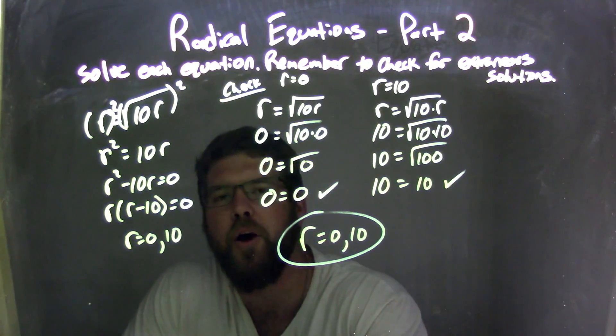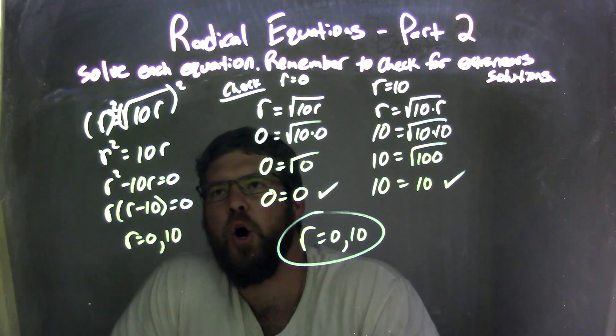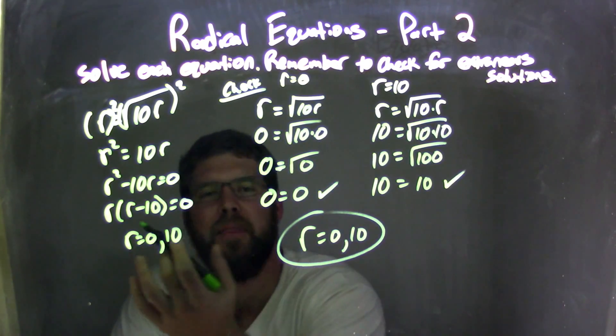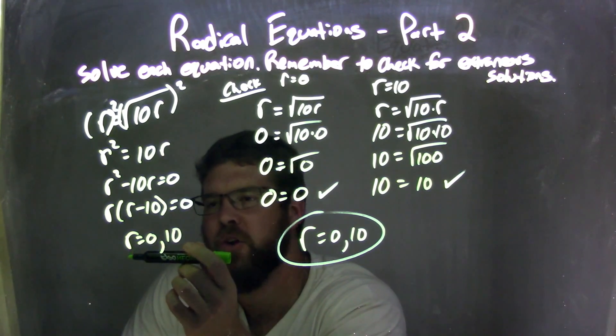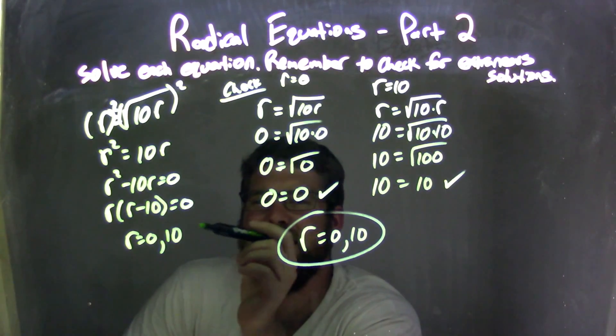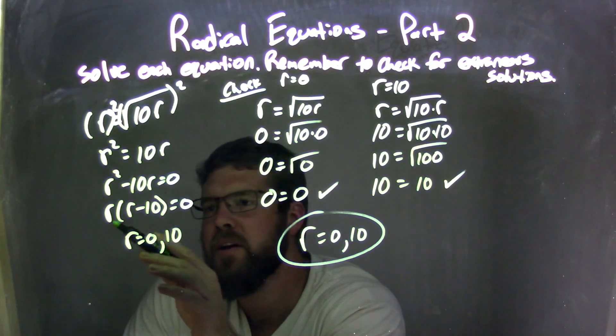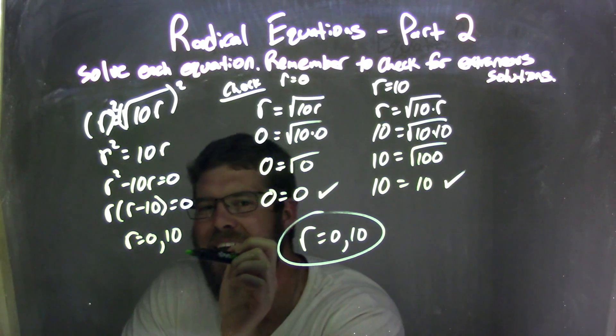Let's do it like we always do. Quick recap. So we're given r equals square root of 10r. Squared both sides, leaving us with r squared equals 10r. Brought that 10r over to the left. r squared minus 10r equals 0. Then I pulled out an r. So I have r times r minus 10 equals 0. We need to set both parts equal to 0, and we have r equals 0 and r equals 10.